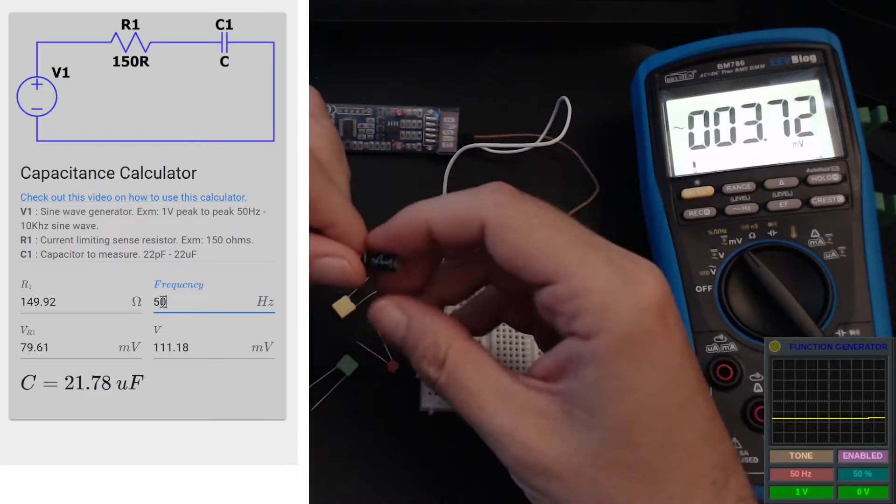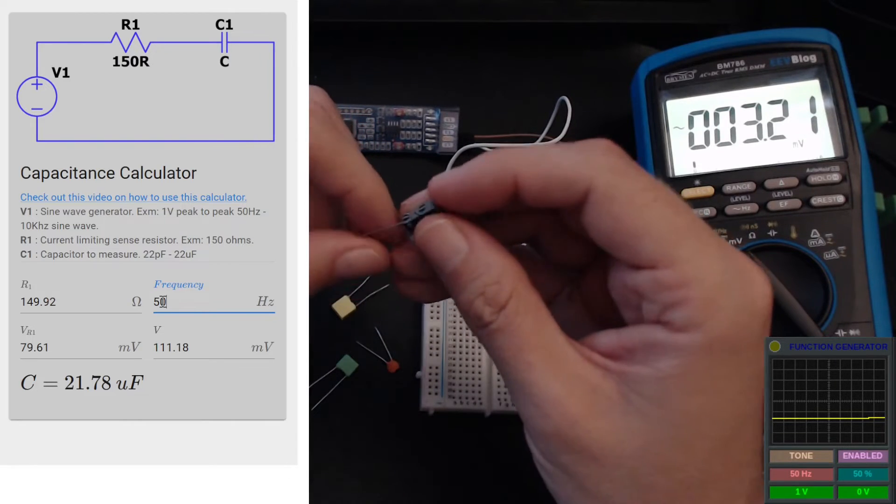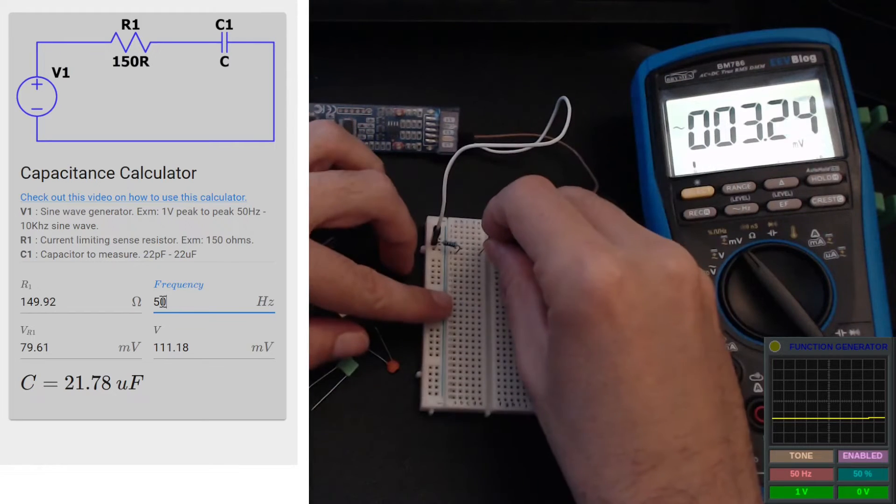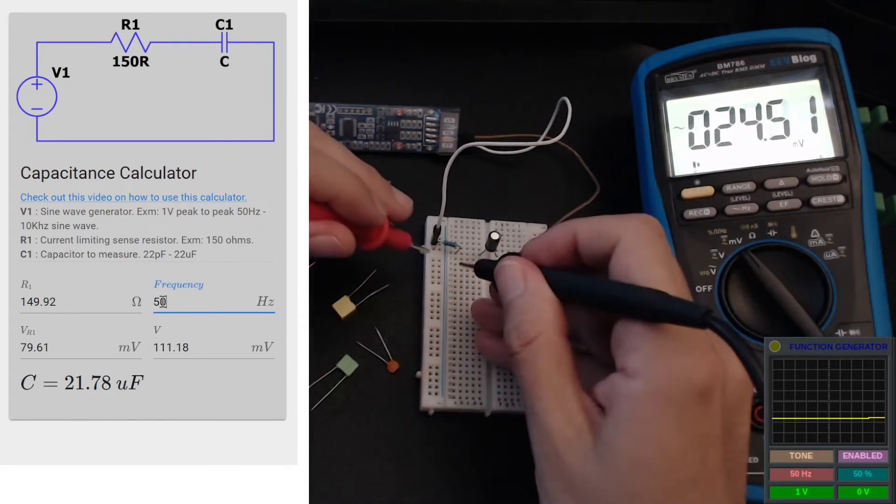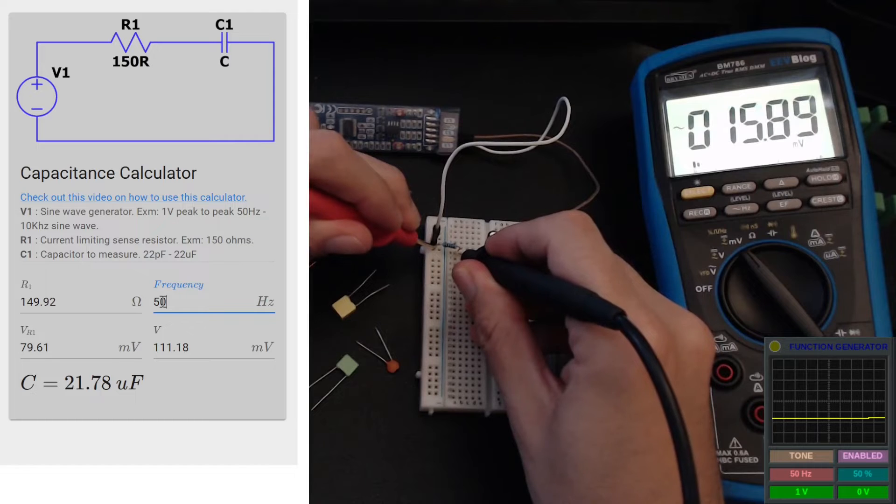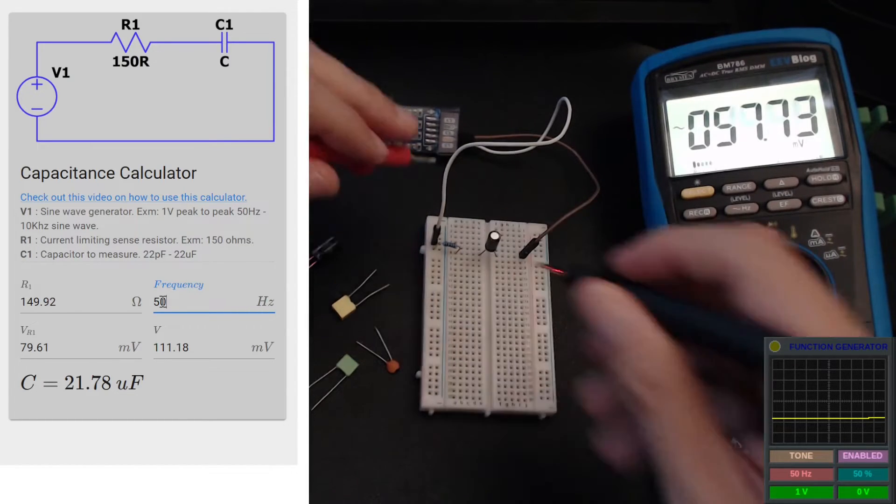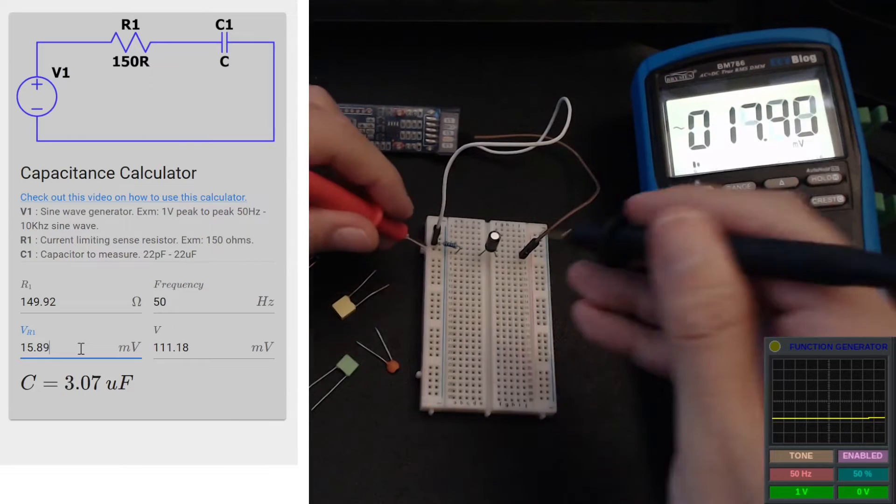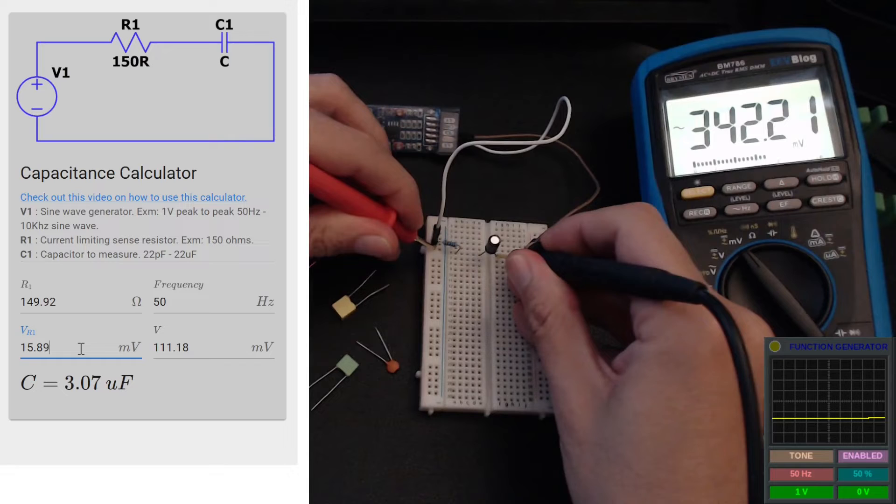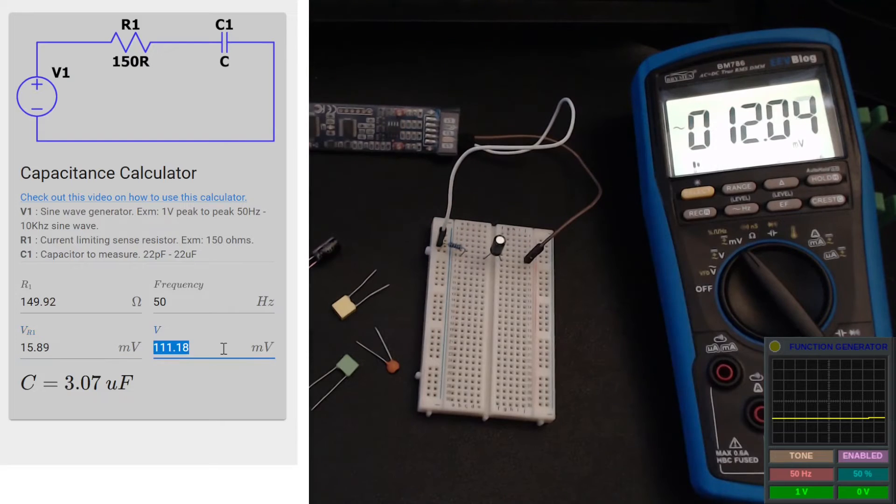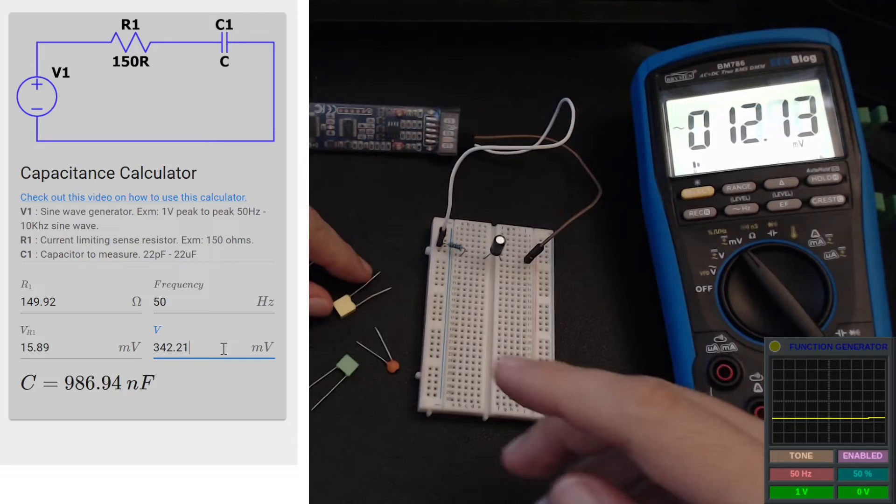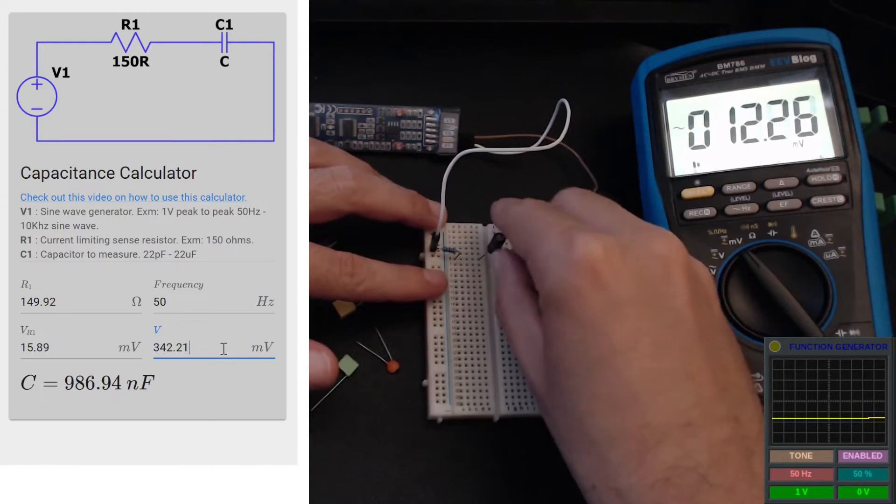Now let's try another cap. This is another electrolytic cap at one microfarad. We can keep the frequency at 50 hertz, I don't think it will need to increase any further at this stage. We'll measure the voltage across the resistor - 15.89 maybe, and then we'll measure the voltage across both the resistor and the cap - 342.21. So we got 986 nanofarads, which is pretty darn close to one microfarad, and again the measurement is well within the component tolerances.